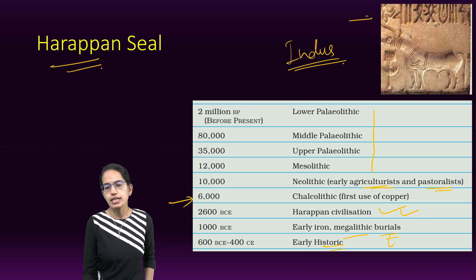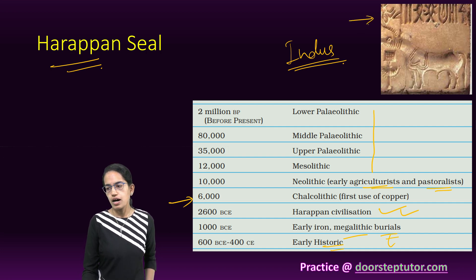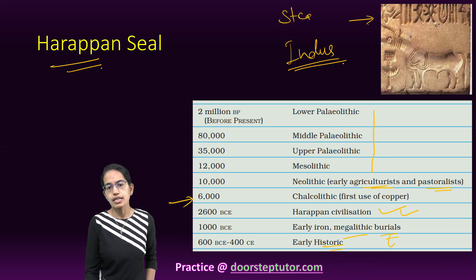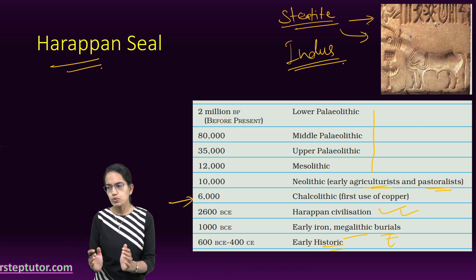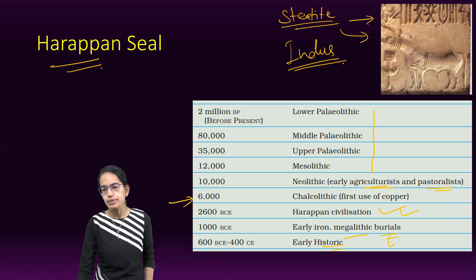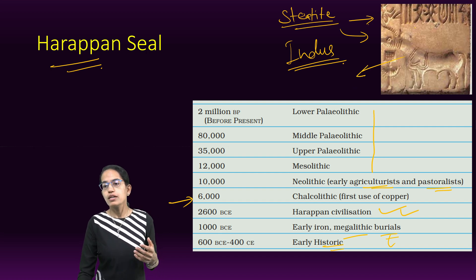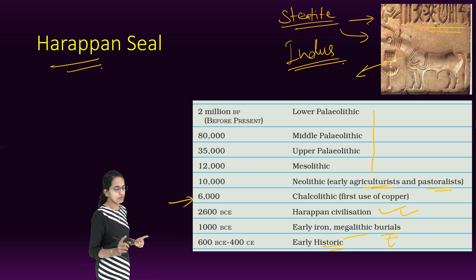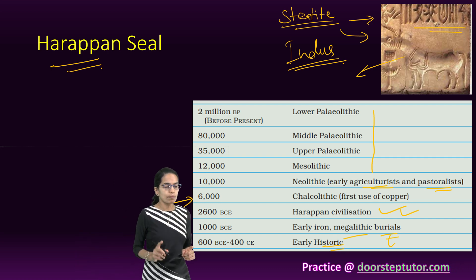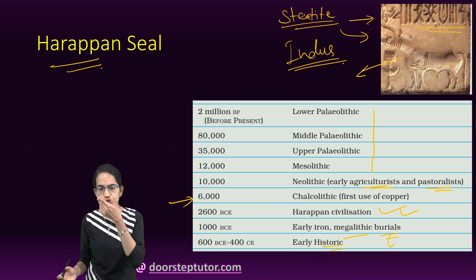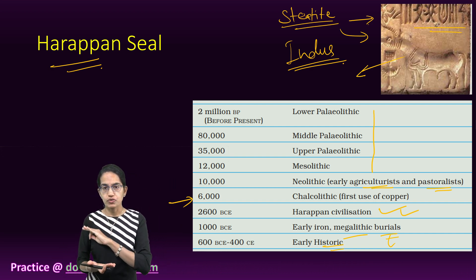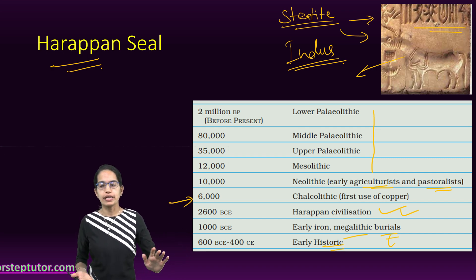Here is a seal indicating the Harappan culture, and this seal is made of steatite. Steatite was commonly used - it is a soft material through which seals and bricks were created. They contained animal motifs along with signs from the script which is still undeciphered. Harappan script is still not deciphered, but it has signs and symbols which are present that we are not able to comprehend so far.